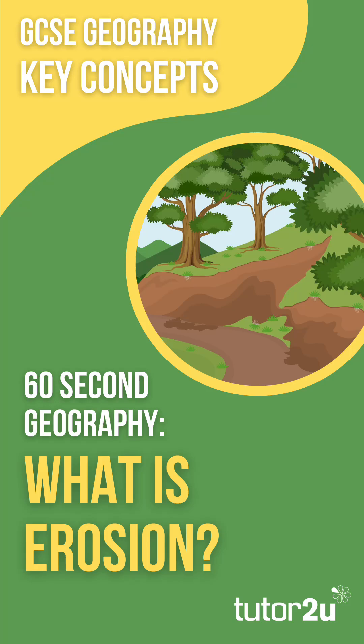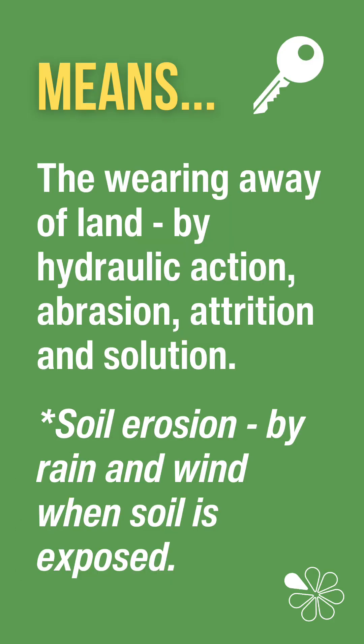Welcome to the 60-second Geography Short on Erosion, a key concept for GCSE geography. Erosion is the wearing away of land, usually by rivers and the sea. There are four main processes of this: hydraulic action, abrasion, attrition, and solution. It is important that you know these specific processes.